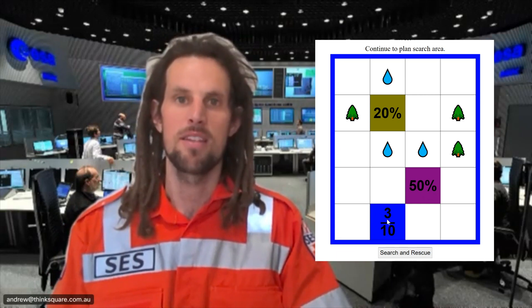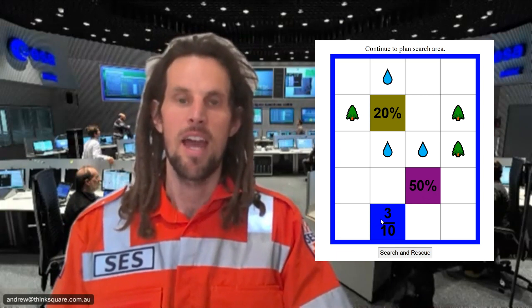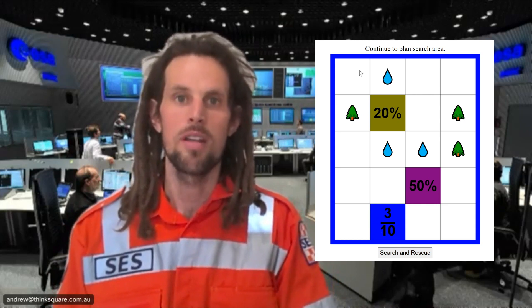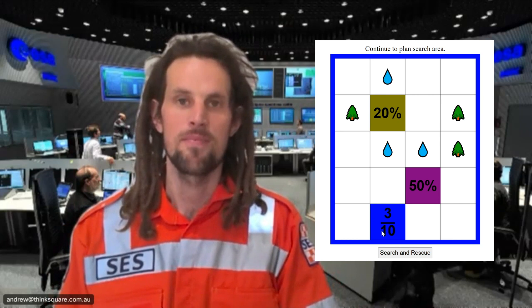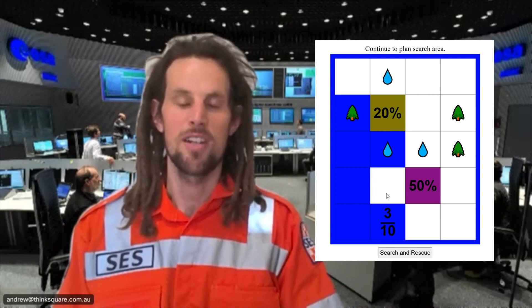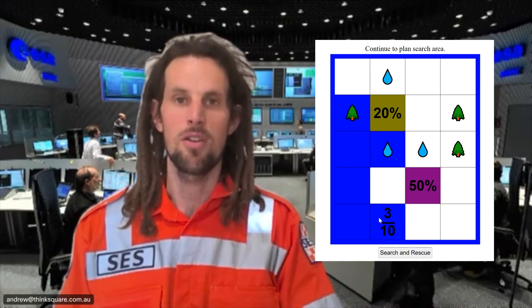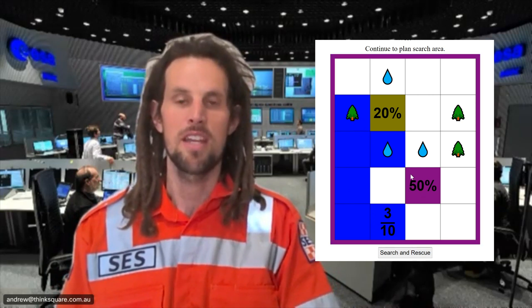To start, you might look at the 3 tenths team down here and work out how many squares of this map they can search. If they can search 3 out of every 10 squares, and there are 20 squares on this map, then 3 out of every 10 would mean 6 out of every 20. So you could search the map this way, but doing it like this would leave a square blank in the bottom left that couldn't be searched by another team. So we might decide to search that bottom left square instead and not search the one next to the 50% crew, so then they could search that.